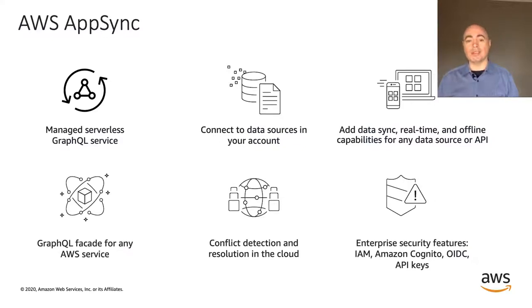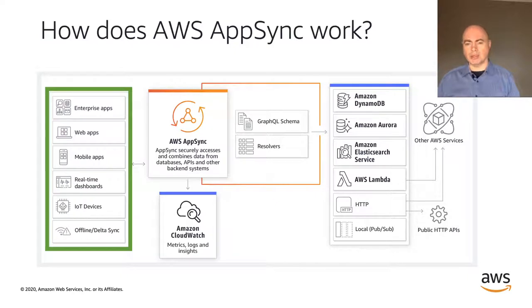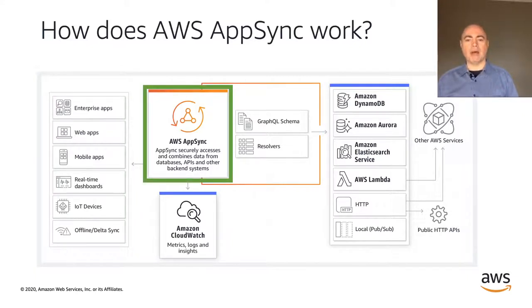AppSync also allows conflict detection and resolution in the cloud instead of having to do it in the client. AppSync integrates with AWS Identity Access Management, Cognito User Pools, any OpenID Connect compliant provider, or you can use API keys, providing powerful options to secure access to your APIs. It's important to understand that AppSync is an application data service with real-time and offline features implemented over GraphQL, with additional capabilities such as built-in authorization and conflict resolution. It's not simply a GraphQL API proxy. AppSync allows you to power your applications with the right data from one or more data sources at global scale, simplifying application development by letting you create a flexible API to securely access, manipulate, and combine data. That can be databases or other APIs.